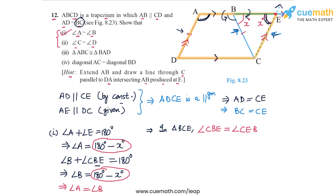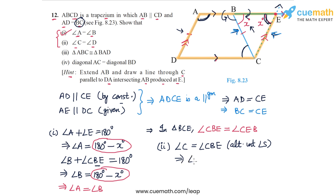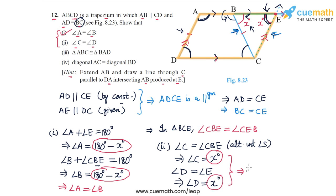So both angle A and angle B have a measure of 180 minus x degrees, and we can conclude that angle A is equal to angle B — this proves part one. Similarly, angle C forms an alternate interior angle pair with angle CBE, so angle C equals angle CBE, which means angle C equals x degrees. Angle D equals the angle at E because they are opposite angles of the parallelogram, so angle D also equals x degrees. Therefore angle C equals angle D, proving part two.